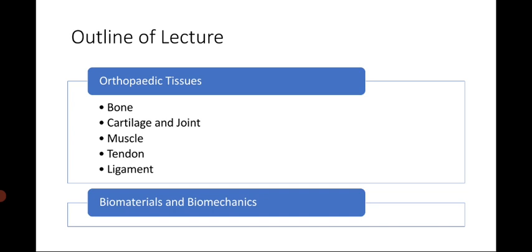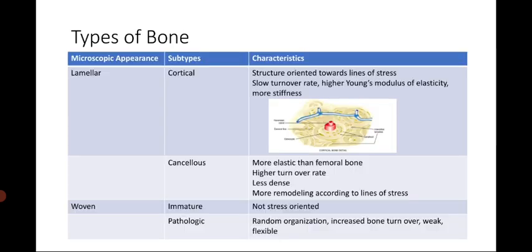For the types of bone, we have two types according to microscopic appearance: lamellar bone and woven bone. For the subtypes of lamellar bone, you have cortical and cancellous. Cortical bone is usually found in shafts of long bones, while cancellous bone is usually found in the ends of long bones. Cortical bone has a structure oriented toward the line of stress, a slower turnover rate, and is stiffer with a higher Young's modulus of elasticity. Cancellous bone usually has a higher turnover rate and is less dense.